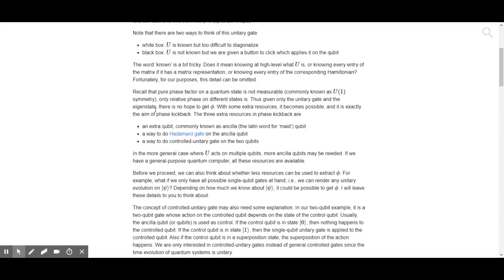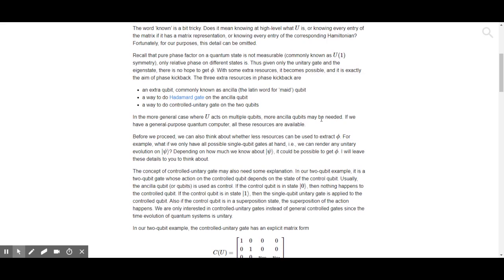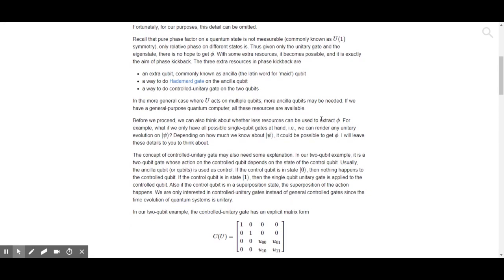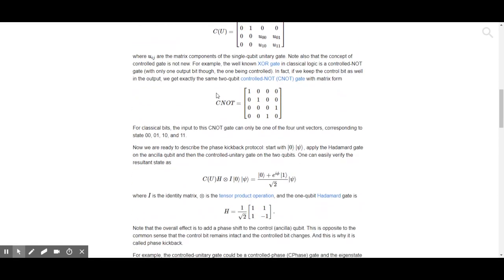Recall that the pure phase factor in a quantum state is not measurable, commonly known as symmetry. Only relative phases on different states. Thus given only the unitary state gate and eigenstate, there's no hope to get done. With some extra resources it becomes possible, and this is exactly the aim of phase kickback: an extra qubit, a way to do Hadamard gate on the ancilla qubit, a way to do the controlled unitary gate on the two qubits.